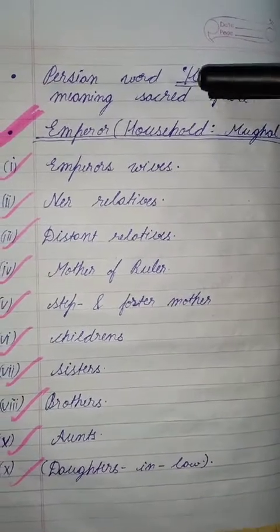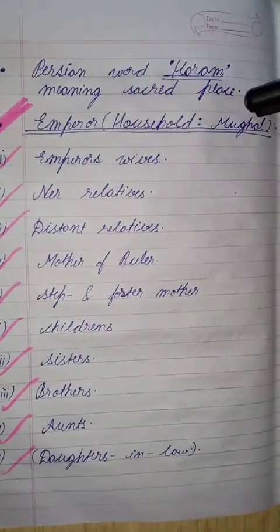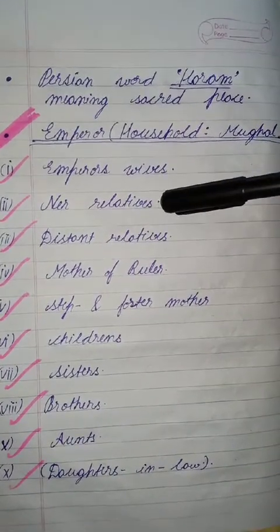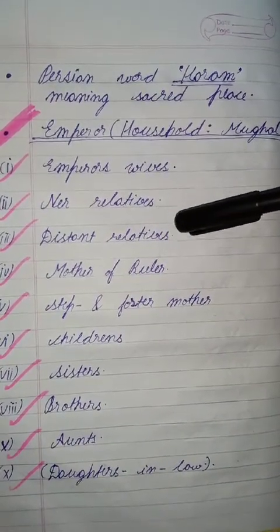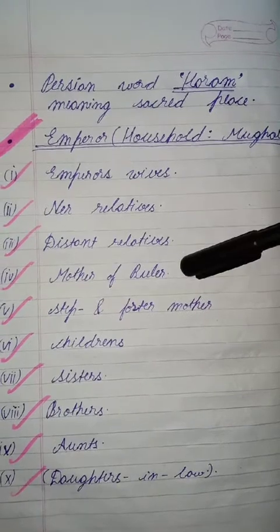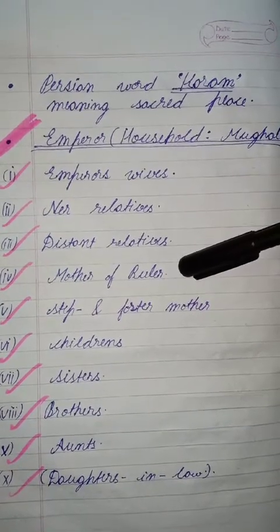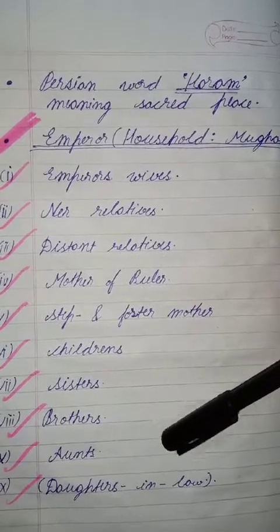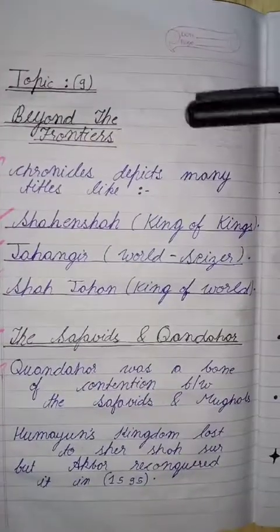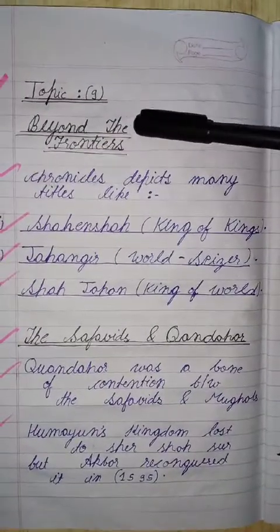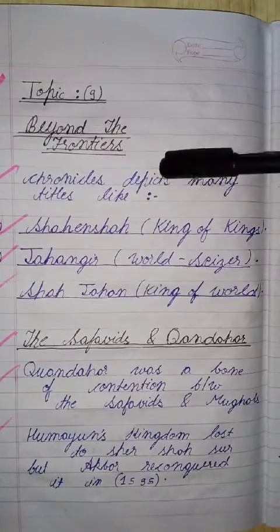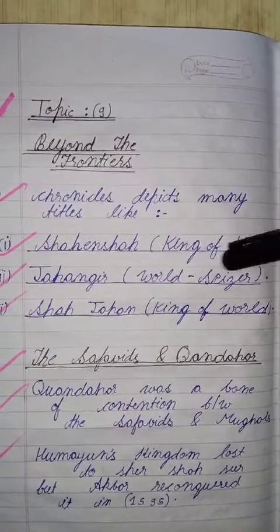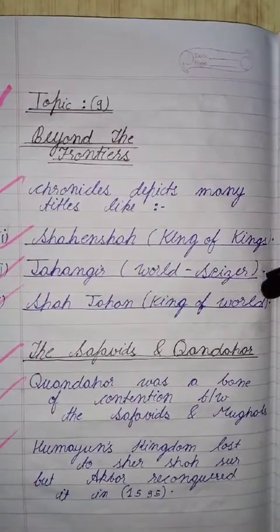Now we will discuss the Mughal emperor's household. The emperor's household included his wives, relations, distant relatives, mothers, rulers, step-mothers, children, sisters, brothers, aunts, and daughters-in-law. Beyond the frontiers, chronicles depict many royal titles: Shehanshah meaning king of kings; Jahangir meaning world's conqueror; and Shah Jahan meaning king of the world.